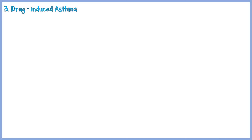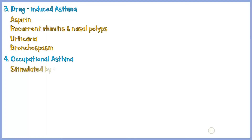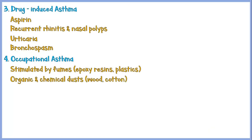Rarely, some drugs may trigger asthma in certain individuals. The classic example is aspirin-induced asthma. These patients usually have other conditions like recurrent episodes of rhinitis and nasal polyps, and urticaria with concomitant bronchospasms. Occupational asthma is stimulated by fumes like epoxy resins and plastics, organic and chemical dusts like wood and cotton, and gases like toluene. Repeated exposure to these substances will trigger intense bronchospasms in these individuals.